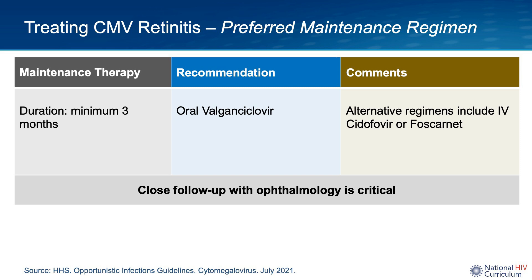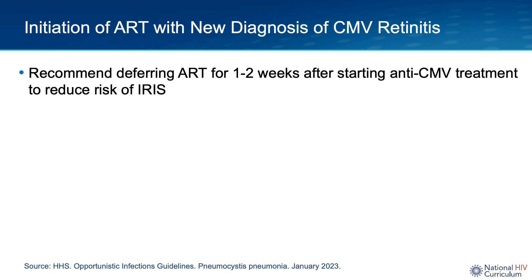Maintenance therapy is usually with oral valganciclovir at a lower dose than what was used for induction. Maintenance therapy is started after induction and after there has been control of the retinitis, as evidenced by resolved or markedly reduced retinal lesion opacities indicating virus inactivity. The duration is a minimum of three months, and ongoing follow-up with an ophthalmologist is important to ensure that the retinal lesions remain inactive. For someone with diagnosed CMV retinitis on anti-CMV therapy, viral replication usually declines within one to two weeks after starting therapy.